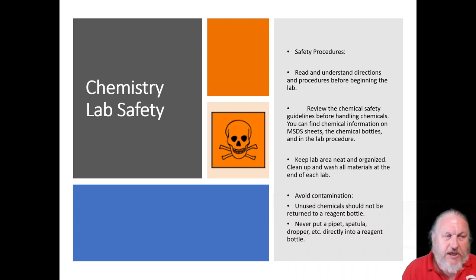Some more chemical lab safety. Read and understand the directions and the procedures before you begin each lab. Review the chemical safety guidelines before you handle the chemicals, and you can find these on the SDS, the chemical bottles, and then the lab procedure. Before you handle a chemical, I'm going to let you know about it. Keep your lab area neat and organized. Clean up and wash all your materials at the end of each lab before you wash your hands. Avoid contamination. Unused chemicals should not be returned to the jar. I will have enough for you laid out so we don't waste material. You never want to put things into a reagent bottle. Don't put a pipette, a spatula, or dropper in because that can contaminate the material.